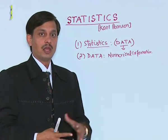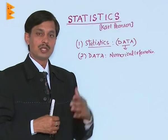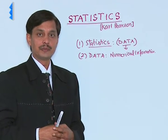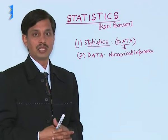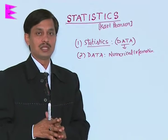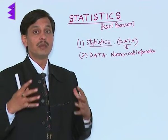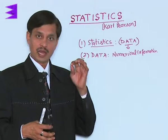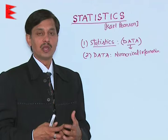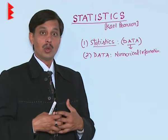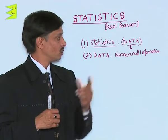If I say A is very poor, B is very rich, C is very intelligent, D is very ugly, E is very beautiful, F is very smart — but these all informations are not numerical. These are qualitative informations, and any information which deals with quality only, no number, no quantity, no numerical information, cannot make the data.